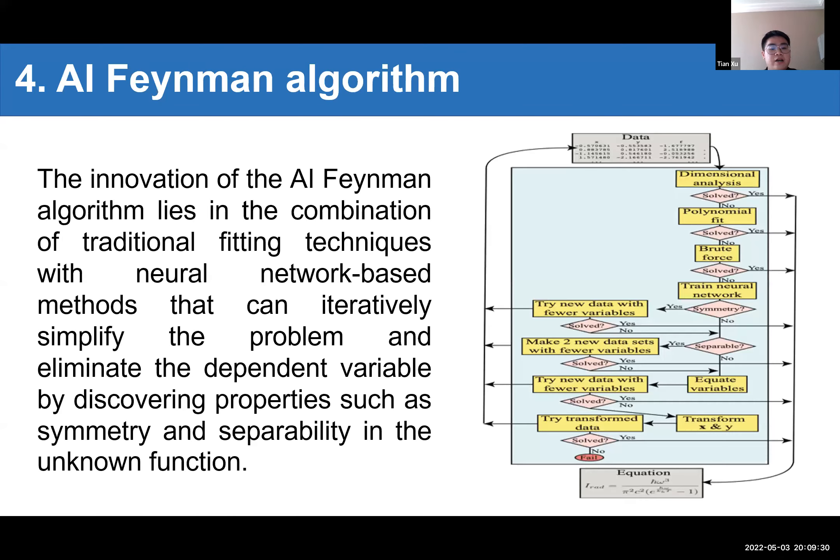After that, I will introduce AI Feynman. The whole algorithm is illustrated schematically in the right figure here. It consists of a series of modules that attempt to exploit each of the properties mentioned above. Like a human scientist, it tries many different structures in turn, and if it cannot solve the whole problem in one fell swoop, it tries to transform and break it into simple parts that can be processed separately, recursively restarting the whole algorithm on each part.